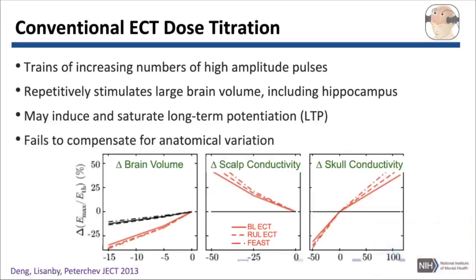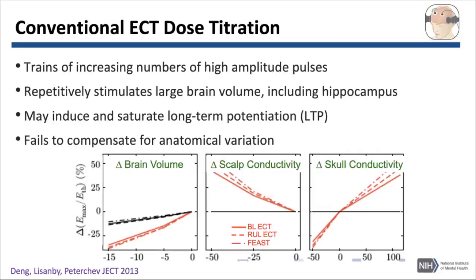Another issue with this conventional approach to dose titration is that it fails to compensate for individual differences in the anatomy of the head, the scalp, and the skull. In this study, we parametrically modeled changes in brain volume, scalp conductivity, and skull conductivity on the x-axis, and you can see with three different types of ECT in the red lines what impact that had on the maximum electric field induced in the brain.